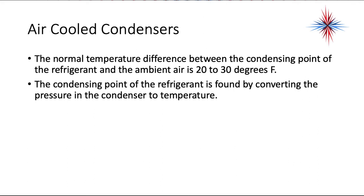The condensing point of the refrigerant is found by converting the pressure on the high side — the pressure in the condenser — to temperature. You do this using your gauges or a temperature-pressure chart, because refrigerant has a temperature-pressure relationship. The key takeaway is that pressures are really just a way to find temperatures; temperatures are what matter.